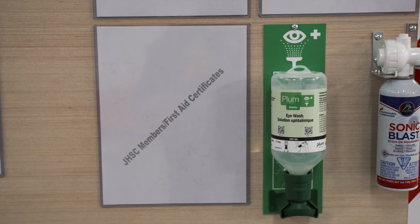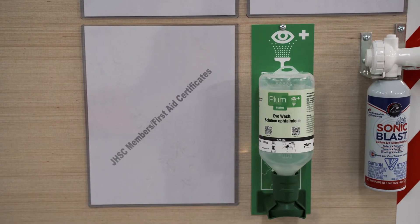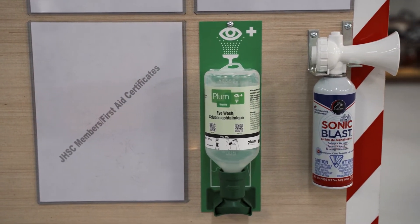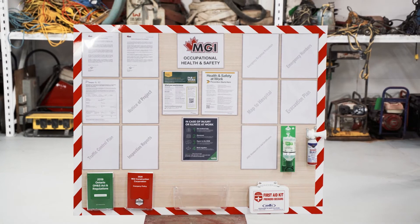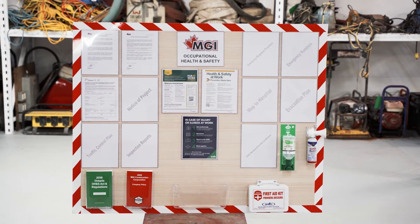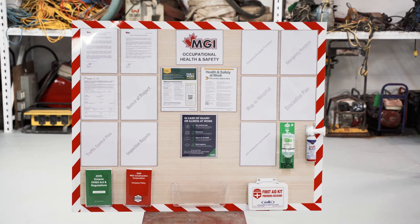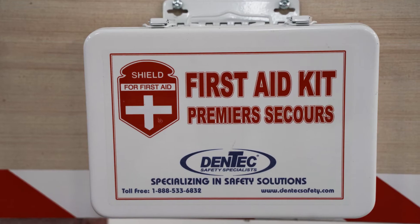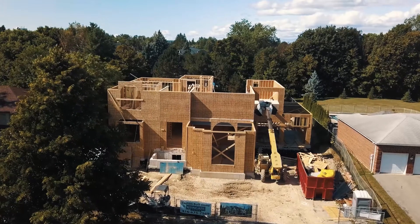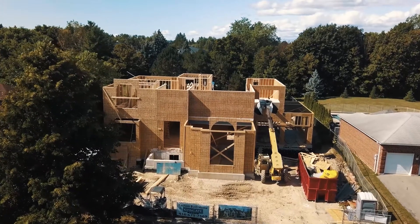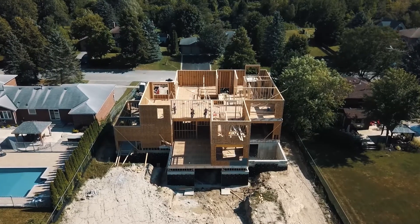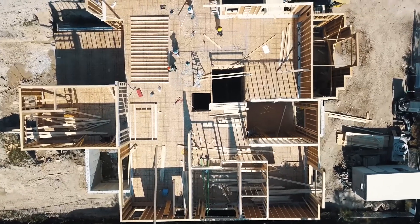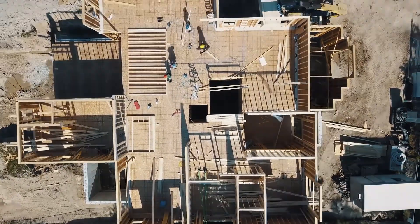Additional items on the board include: Emergency Response Procedure, Emergency Numbers, Map to Hospital, Evacuation Plan, JHSC Members and First Aid Certified Employees, Location of Safety Data Sheets, Eyewash, Air Horn, and First Aid Kit. If you need more information or have further questions regarding any of the material, please reach out to the Health and Safety Representative or Site Supervisor.